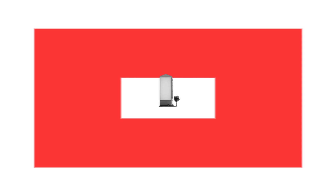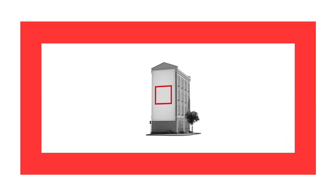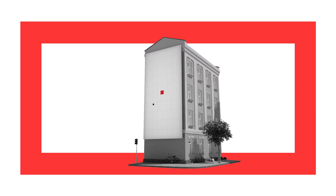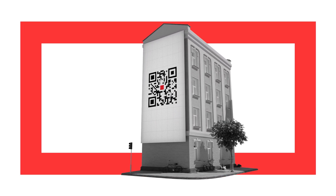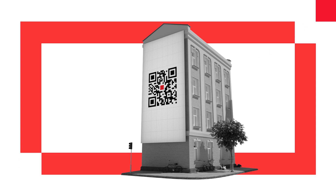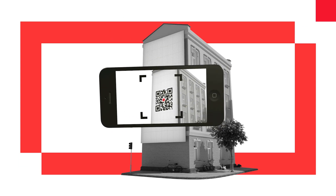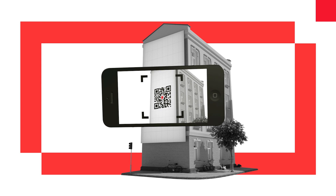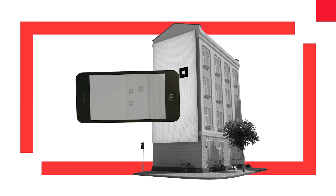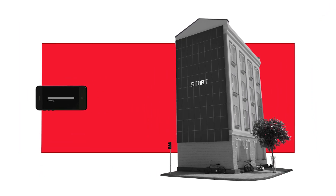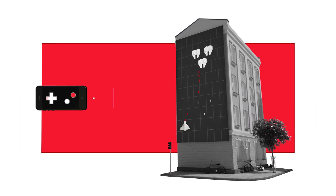DiriMode-enabled systems use a unique QR code — the Diri code. It invites users to interact with your brand or product. They simply scan the Diri code, and voila! The app automatically connects to the system and becomes a versatile remote control.